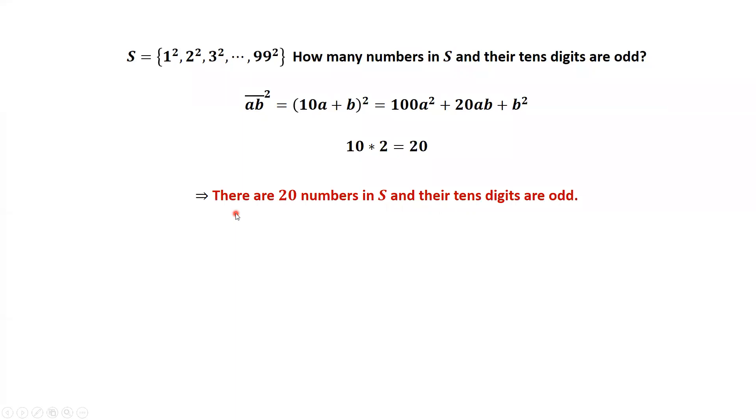This is the conclusion. There are twenty numbers inside of S such that the tenth digits are odd. That's all. Thanks for watching and I'll see you next time.